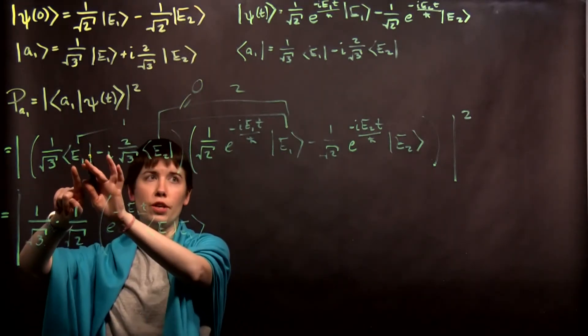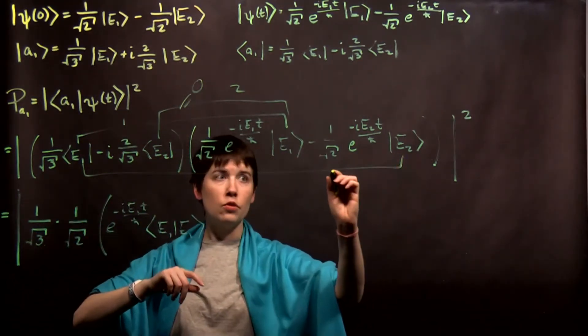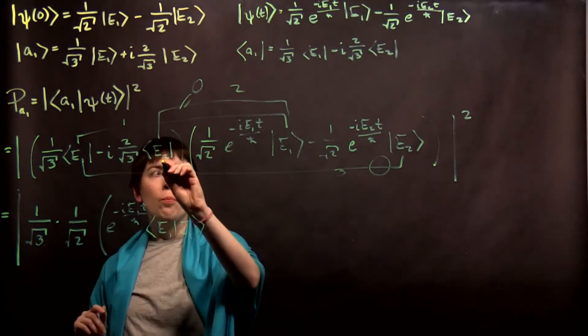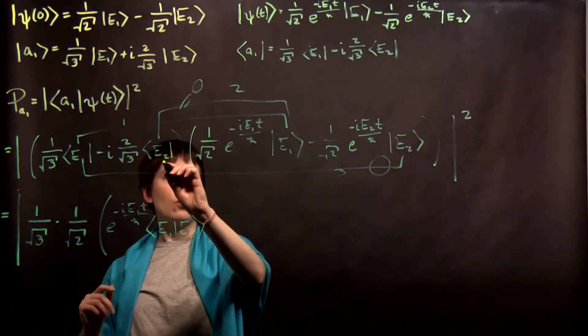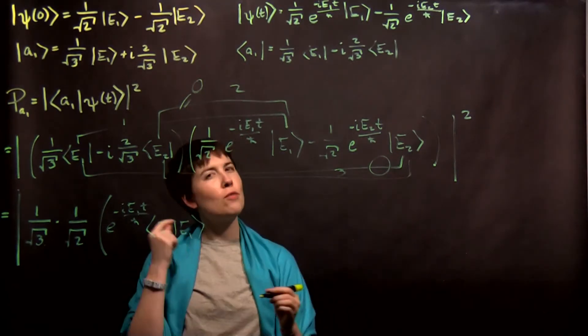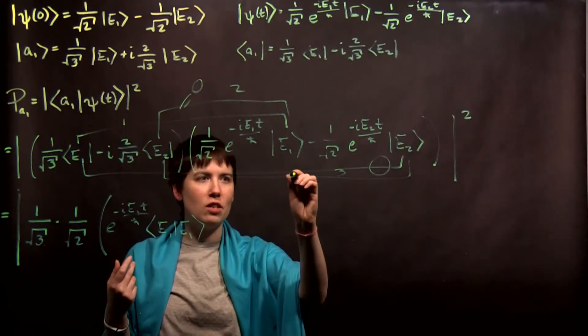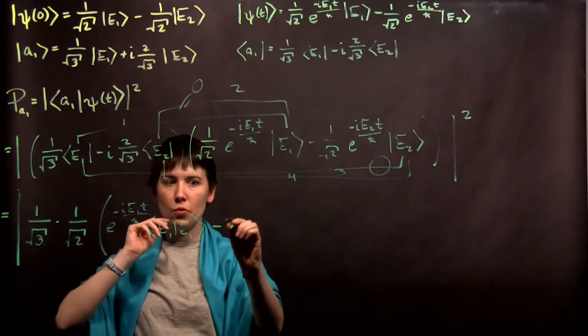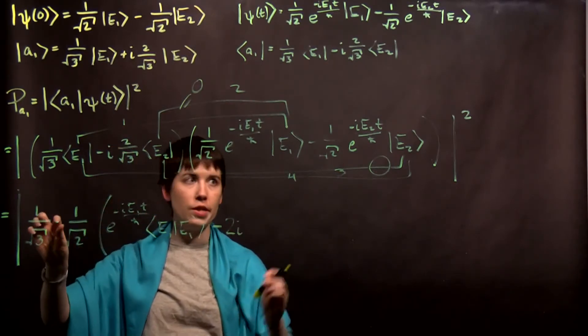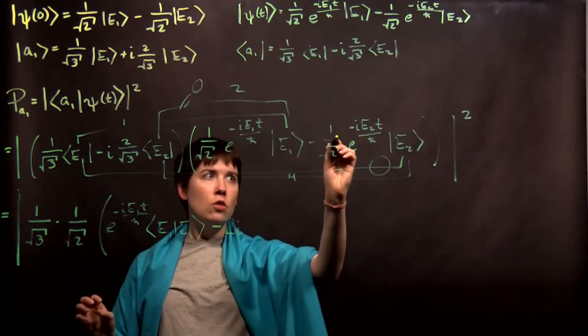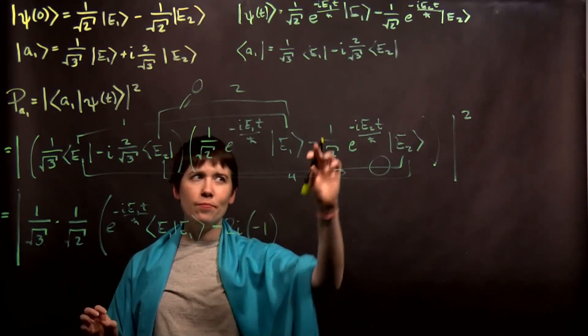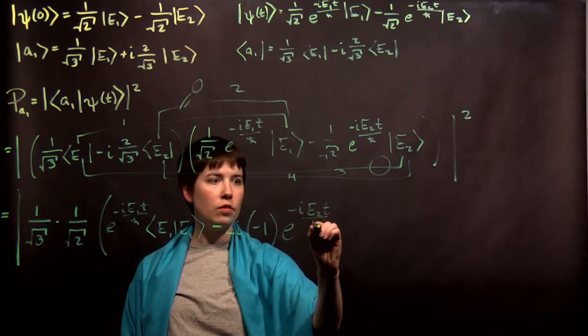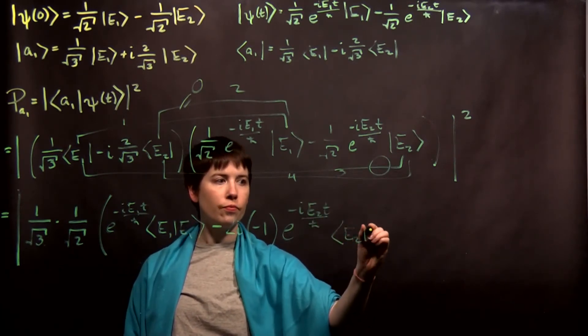I then come and look at e1 with e2. This would be my third term, but again I have an inner product of two orthogonal vectors. So that's 0. It doesn't contribute. I've lost track of where I am. Then I have e2 with e2. If you have a pattern of how you foil, that would be good. It would help you from getting lost. My fourth term does actually contribute. And so now we have to be careful. And so I'm going to say minus 2i, because I've already brought out that square root of 3. But now here I have negative. So I'm going to just explicitly call this negative 1. I've already brought out that 1 over the square root of 2. e to the negative i, e2t, over h bar, and then inner product of e2, e2.